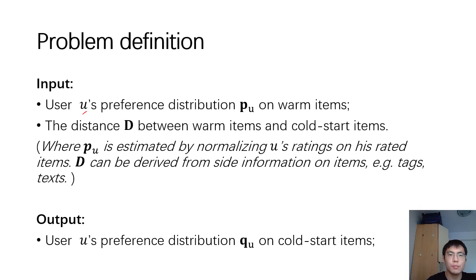This is our problem definition. Given the user's preference distribution p_u and the distance among the items, we are going to infer user's preference distribution on his cold start items.